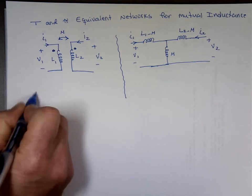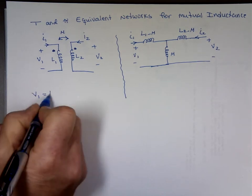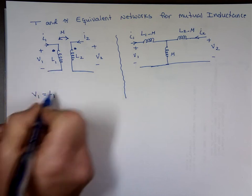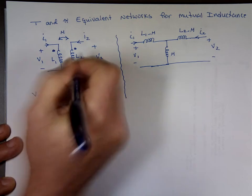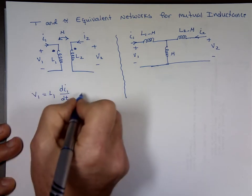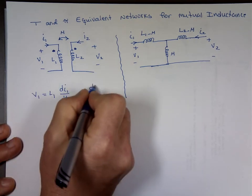Like for this one, what's V1 equal to? L1 times the derivative di1 dt. Now I'll leave the sign. Let's look at the mutual inductance di2 dt.